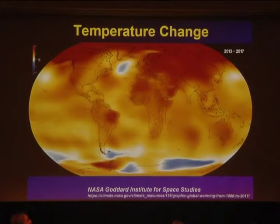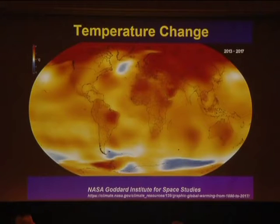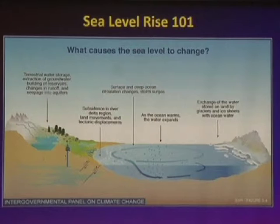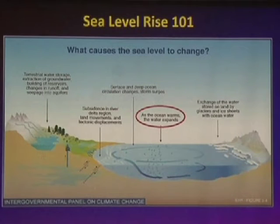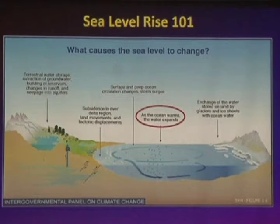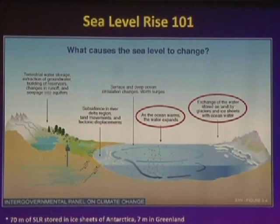Temperature has been increasing 70 times faster than any time in the last 20,000 years — this is not normal. Why does this matter for the ocean? Most of this excess heat — about 90% — is absorbed by the ocean. That's a good thing; otherwise the average temperature on Earth would be about 150 degrees. However, as the ocean warms, it expands — this is called the steric effect — causing sea level to rise. That accounts for about half of all sea level rise in the last century. The other major factor is the melting of land-based ice, accounting for the other 50%.